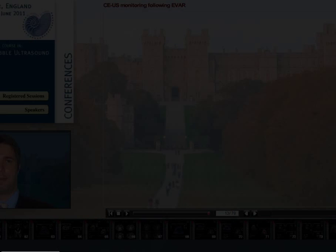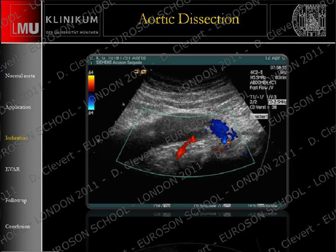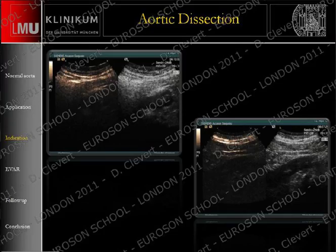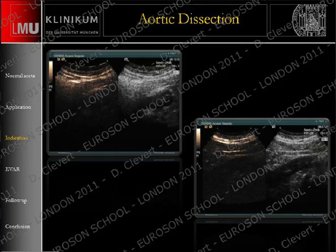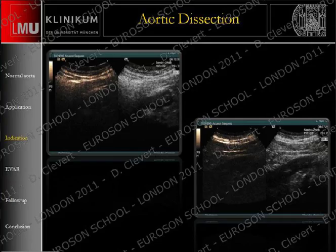Where do we find more information by using contrast-enhanced ultrasound? Starting with the axial view using side-by-side technique, in most cases contrast arrives first in the true lumen. We can identify the true lumen, the false lumen, the right renal artery, and also in the longitudinal view, we see the true lumen, false lumen, and right renal artery. The left renal artery is not visible in this patient because this patient has only one kidney. After documenting the dissection, we also use the time to examine the right kidney.